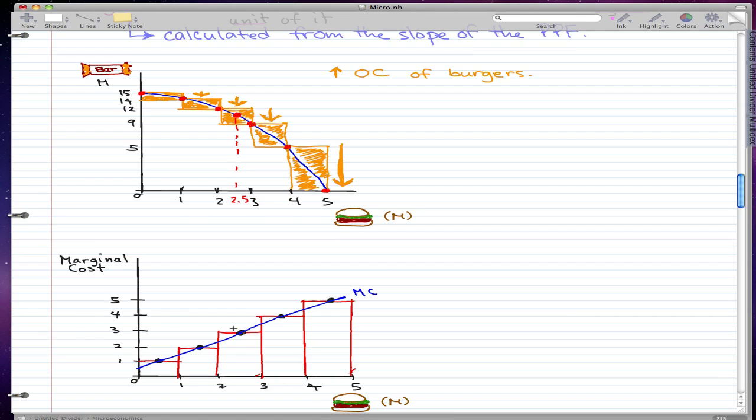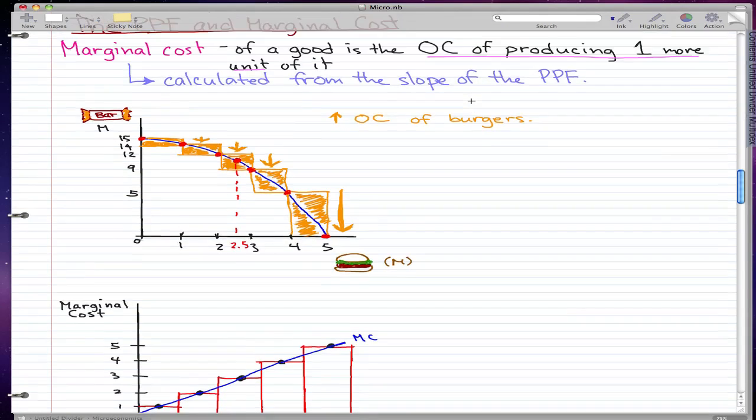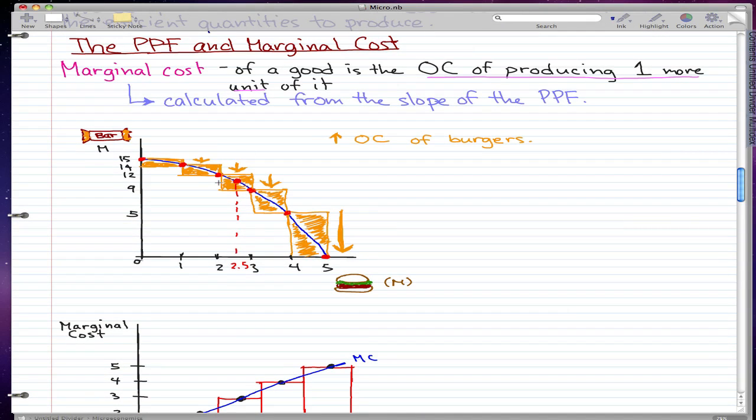That's pretty much what I wanted to talk about for this graph. And I just remembered that I have one last thing to teach you guys, and that is how to calculate the marginal cost from the slope of the PPF. Let's just use this 2 million burgers and 3 million burgers as an example. Remember that slope is pretty much rise over run.